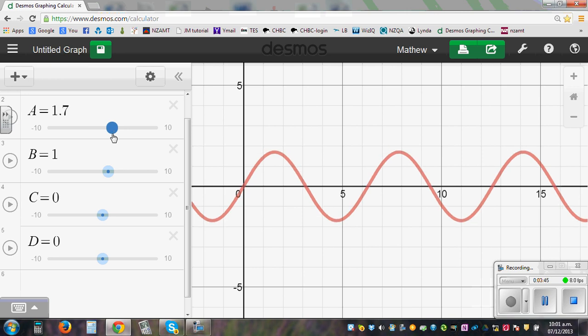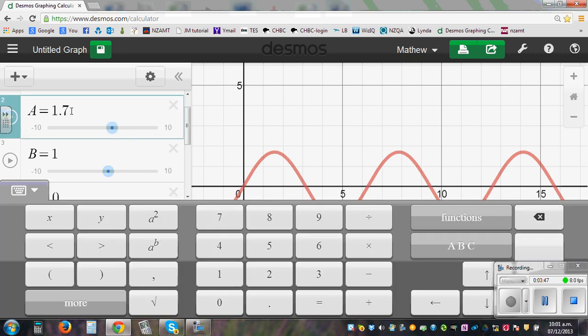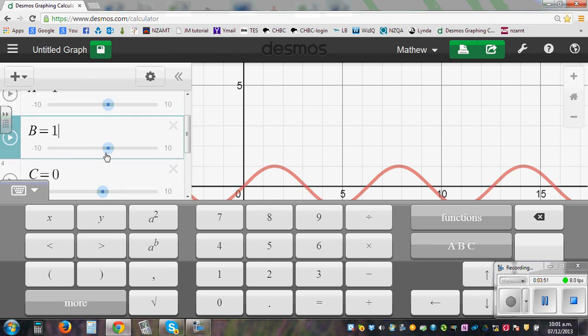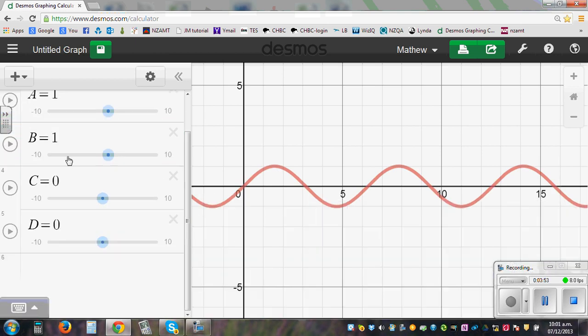So let me make it 1 again here. So let me type in 1 here. Amplitude of 1. Let's see what happens when this B changes. So B affects the period. So here B is 1. That means 1 period is of 6.28 or 2 pi radians.